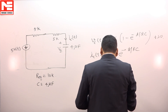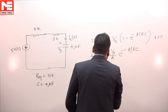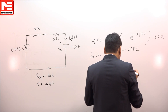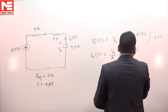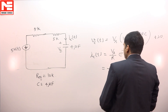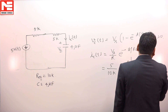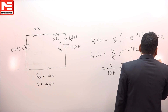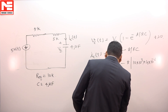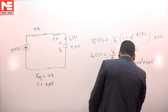V_S is 5, so 5 divided by R which is 10kΩ, times e to the power of minus T divided by R times C — that is 10×10³ times 4×10⁻⁶ — which comes out as 0.5 e to the power of minus 25T.